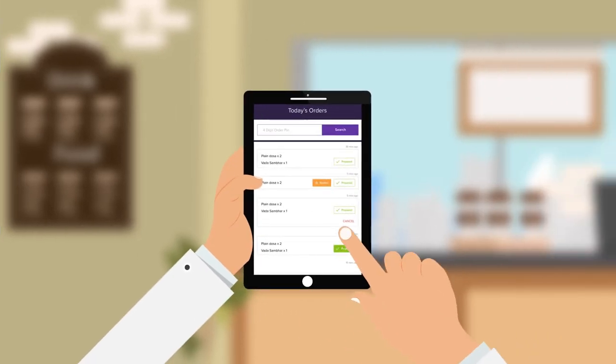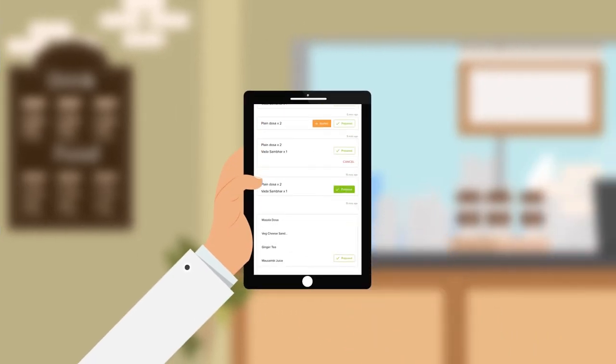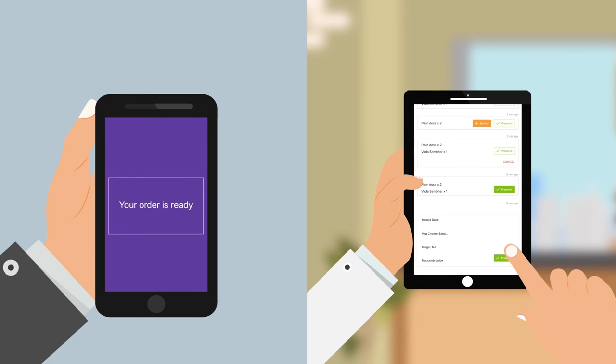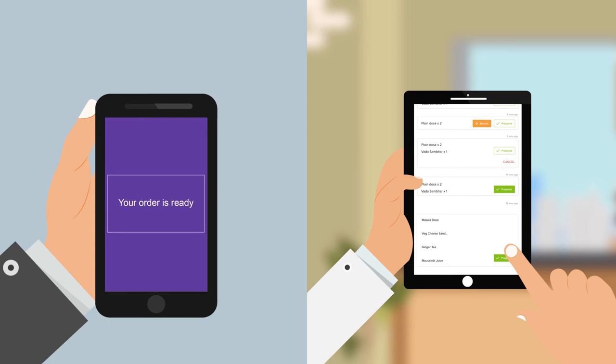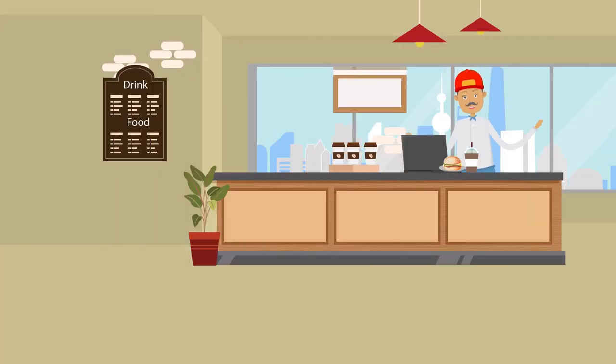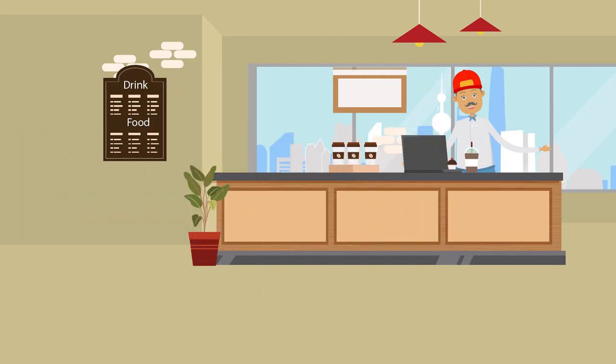His order is automatically sent to the kitchen and flashes on the order screen. Once the food is ready, the chef taps on the prepared button and Josh immediately receives a notification to collect his food. Josh happily heads to the cafeteria and directly collects his meal, piping hot just the way he likes it.